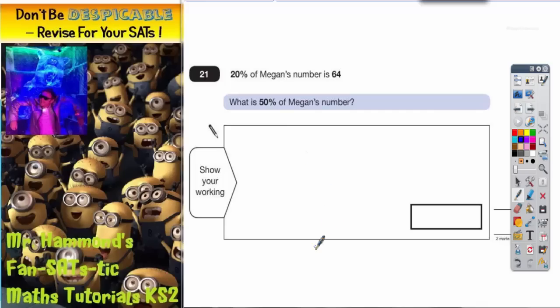Question 21 is all about percentages and making sure you understand the relationships between them. It says 20% of Megan's number is 64. So if Megan's thought of a mystery number, she doesn't actually tell us what that mystery number is. The mystery number is not 64, but 20% of that mystery number is 64.